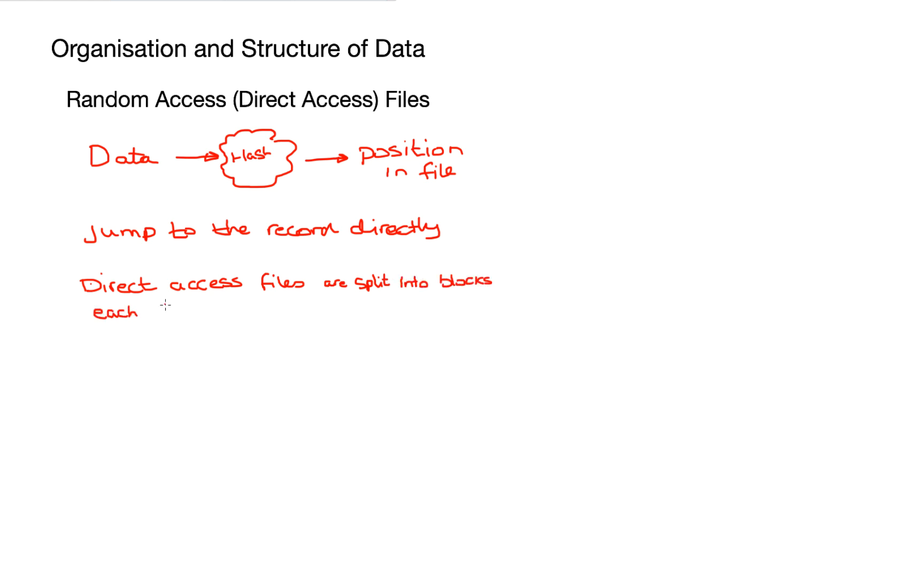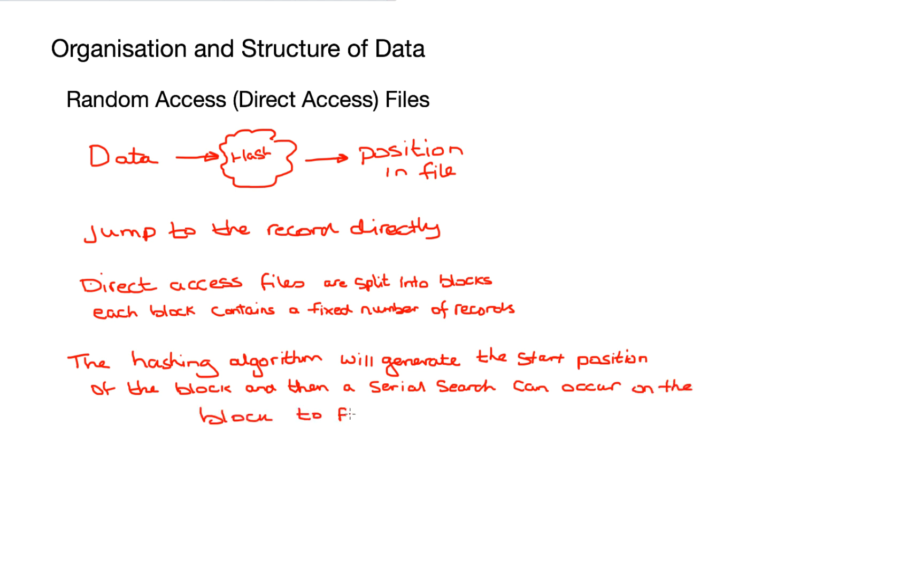And the benefit to having random or direct access files is that we can jump to the record directly. And direct access files are split up into blocks. Each block contains a fixed number of records, and the programmer will design the hashing algorithm to generate the start position of the blocks in the file. Once we reach the start of a block, then we would use a serial search to find the record we are looking for.